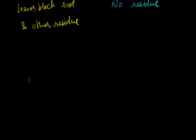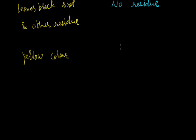The color of luminous flame is yellow. The color of non-luminous flame is blue. These are the main differences between luminous and non-luminous flame.